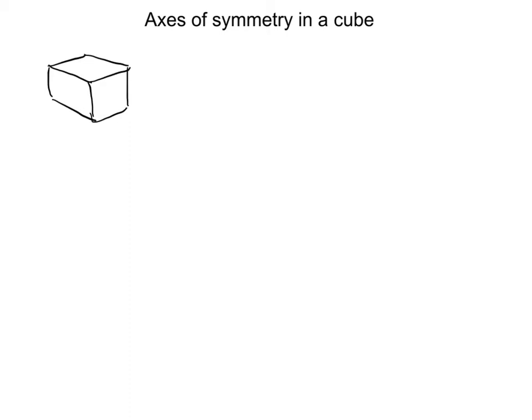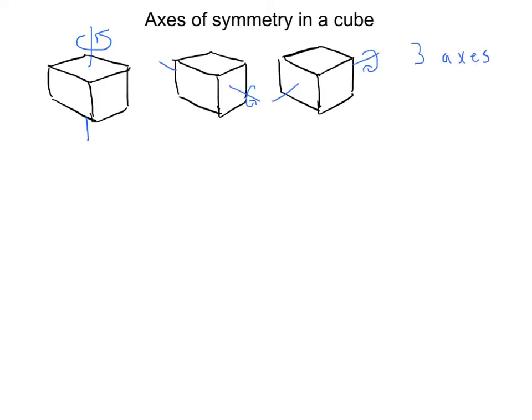The first axis we find is the one where we spin it like a top. Actually, I guess all of these could be spun like a top, but this one's going from the midpoint right in the center of a face, out the opposite center of a face on the opposite side there. How many are there like this? There are three, because a cube has six faces.